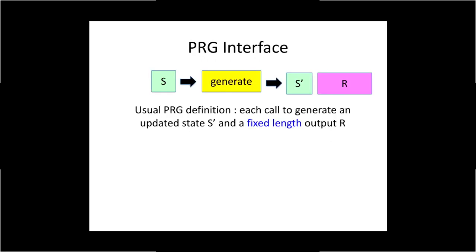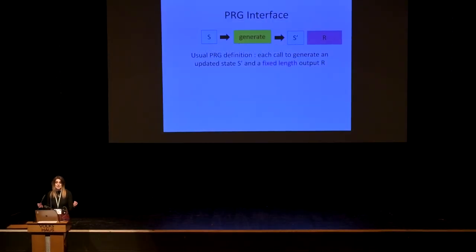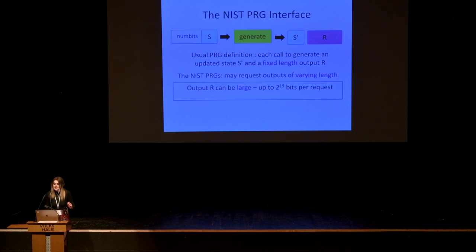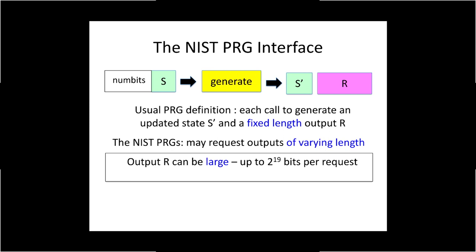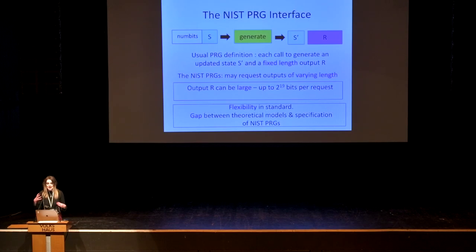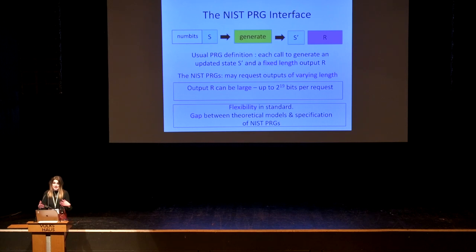When we think about PRGs as usually defined in the literature, we have some state initially constructed from a high-entropy seed, and then every time we need pseudo-random bits, we call a generate algorithm which takes the state as input and returns an updated state and a fixed-length pseudo-random output. The NIST PRGs are specified differently in that the standard allows one to request outputs of variable length in each call, and these outputs can be large — up to 2^19 bits per call. This is an example of the flexibility we're discussing, and highlights the gap between how PRGs look in theory and how the NIST PRGs are specified.